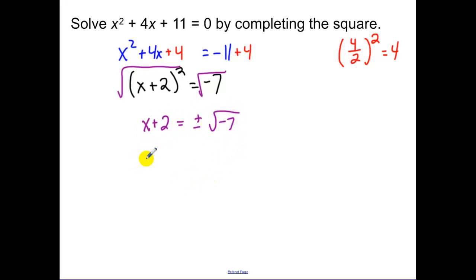Now I don't like that square root of negative 7, so what we have to do is pull out the negative 1, which is i. So we leave it like that. And then we subtract the 2 over, so I have negative 2, plus or minus i root 7.